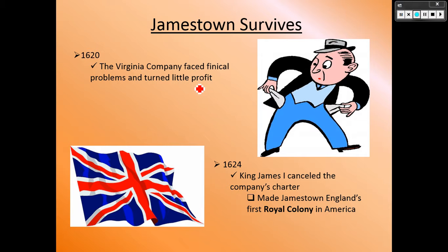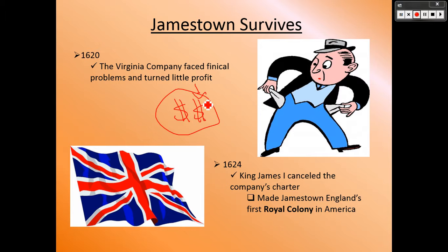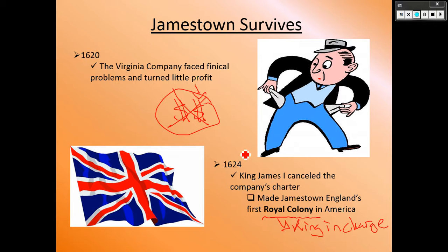Eventually the Virginia Company stopped making money — it was hard when the only people you could really trade with were native Americans, who didn't use English currency. They were turning little profit, so the king cancelled their charter and made Virginia a royal colony, meaning the king was now in charge and made all the rules. Having given colonists the freedom to make their own decisions and then taking that freedom away — this is just the start of the struggle that would eventually lead to the colonists revolting in the American Revolution, which we'll get to in Chapters 5 and 6.